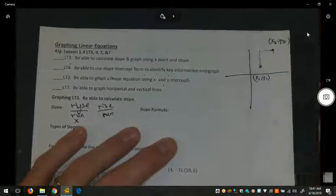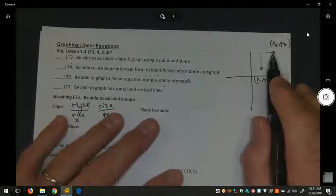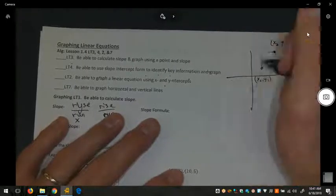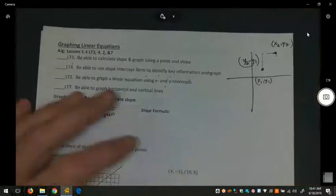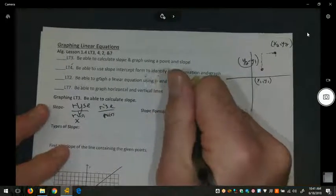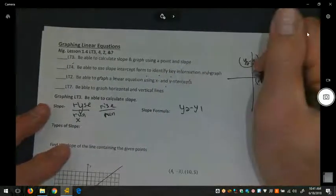The height from here to here is the difference of this height to this height. So y sub 2 minus y sub 1. That would be our rise.